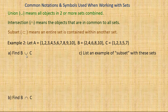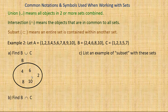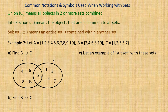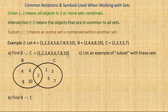In part A, we find the union of B and C. It's helpful to draw a Venn diagram: B contains two, four, six, eight, and ten; C contains one, two, three, five, and seven. Notice that two is common to both, so it sits in the overlapping region. The union of B and C is all of those numbers combined: one, two, three, four, five, six, seven, eight, and ten — everything except nine.